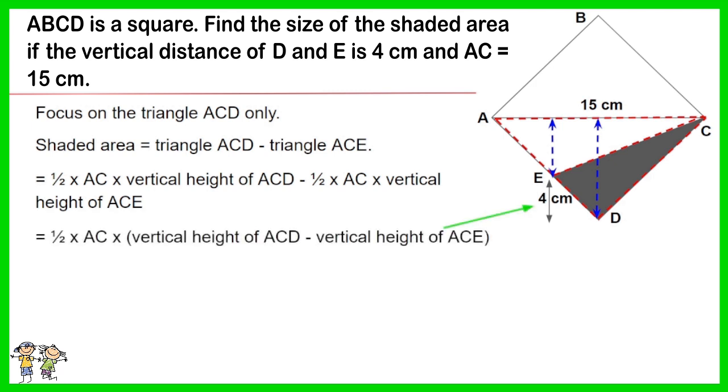Work out the equation. You get half times AC times the difference in height of ACD and ACE, which is 4 cm. Solve the equation of half times 15 times 4. The answer is 30 cm squared.